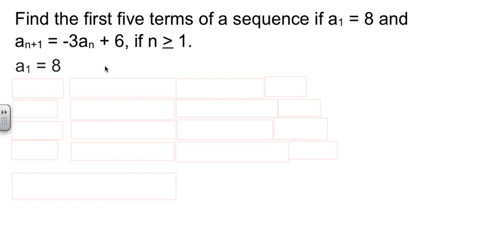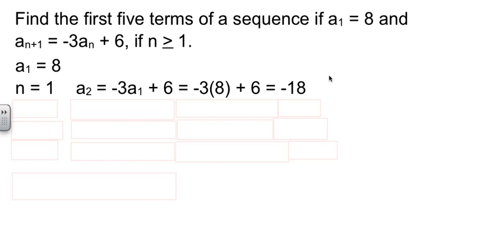We know the first term is a₁. The next term, when n equals 1, so that we get the second term, it'll be negative 3 times a₁, plus 6. Well, we know what a₁ is. And then a little bit of arithmetic, and we get what a₂ is.